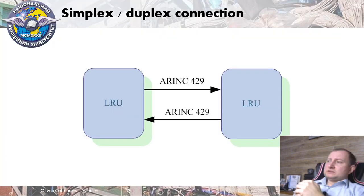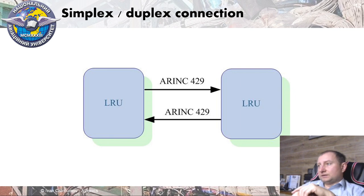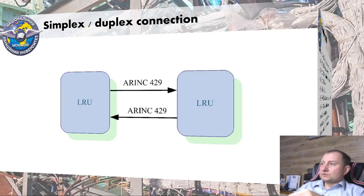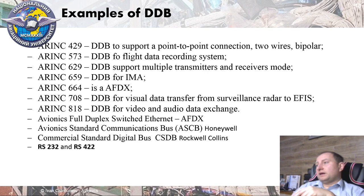If a data bus supports only simplex connection, duplex connection can be realized by adding one additional simplex channel in the opposite direction. If we have a simplex data bus it is not a problem — we can use two simplex data buses to provide duplex connection between two LRUs. A good example is ARINC 429, where two ARINC 429 channels are used to support duplex connection.